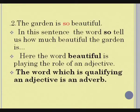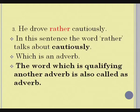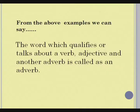Next sentence: the garden is so beautiful. In this sentence, the word 'so' tells us how much beautiful the garden is. Here the word 'beautiful' is playing the role of an adjective. The word which qualifies an adjective is an adverb. The third sentence: he drove rather cautiously. In this sentence, the word 'rather' talks about 'cautiously,' which is an adverb. The word which qualifies another adverb is also called an adverb. From the above examples, we can say the word which qualifies or talks about a verb, adjective, and another adverb is called an adverb.